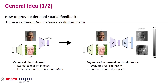Therefore, we propose to let the discriminator take the structure of a typical semantic segmentation network. In particular, the discriminator should have an encoder-decoder structure. This means the GAN loss is now calculated per pixel on the decoder output. An example of the decoder output is shown on the right. The dark areas are classified as fake by the discriminator, and bright areas are classified as real.